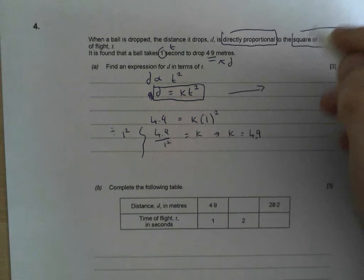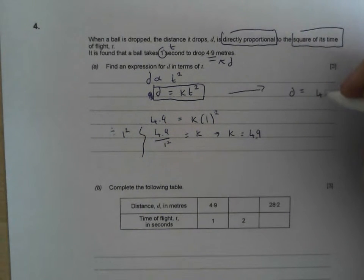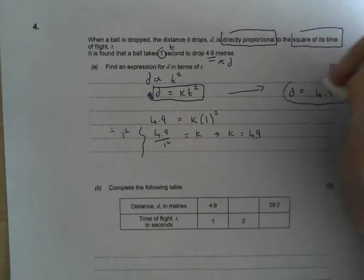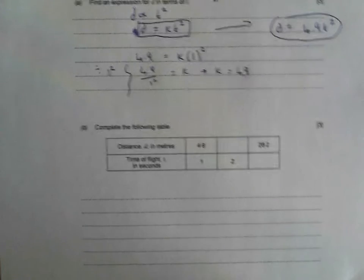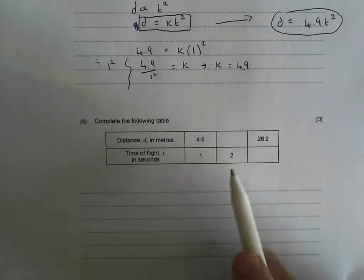Because I want d in terms of t, I need d equals, so d is going to be equal to k, which is 4.9 lots of t squared. And there is my lovely equation. And now I can use that equation to help me work out anything. So let's have a look at this.